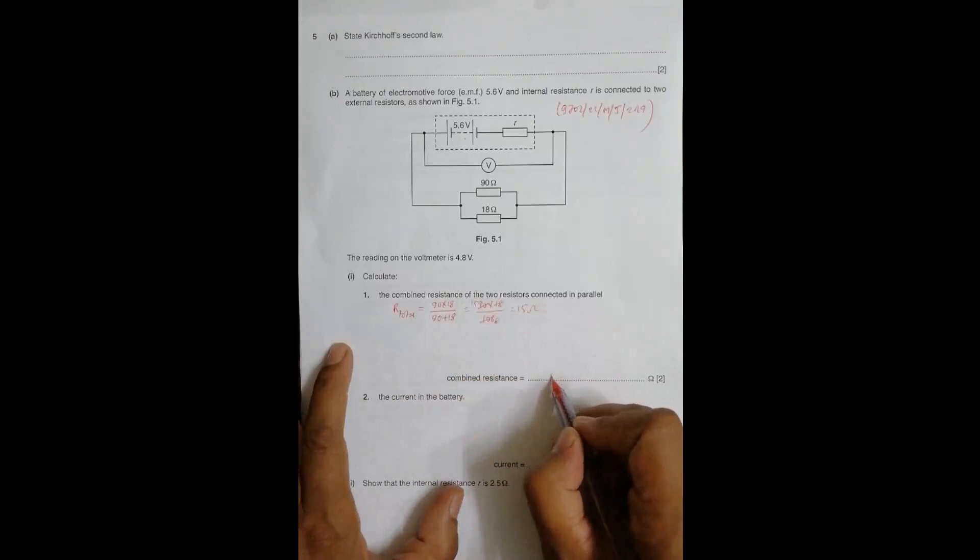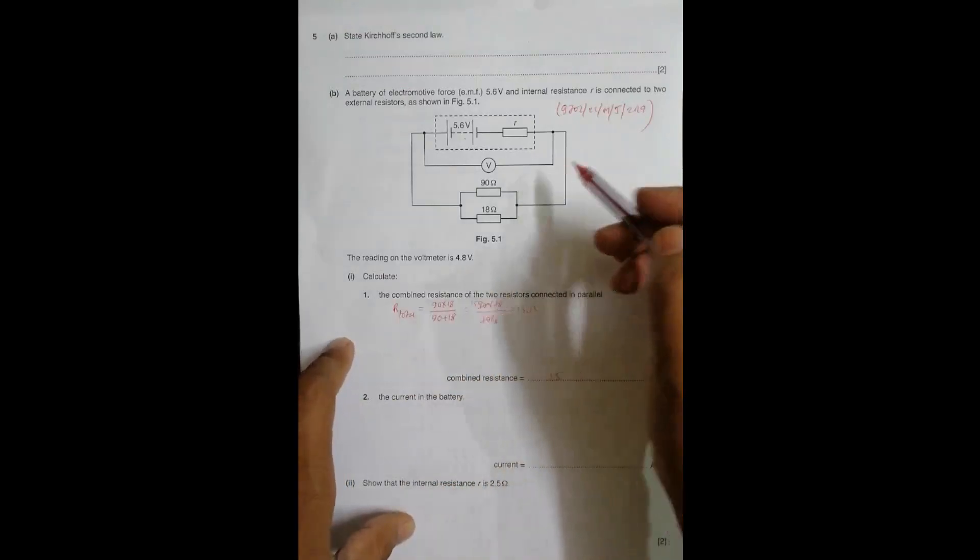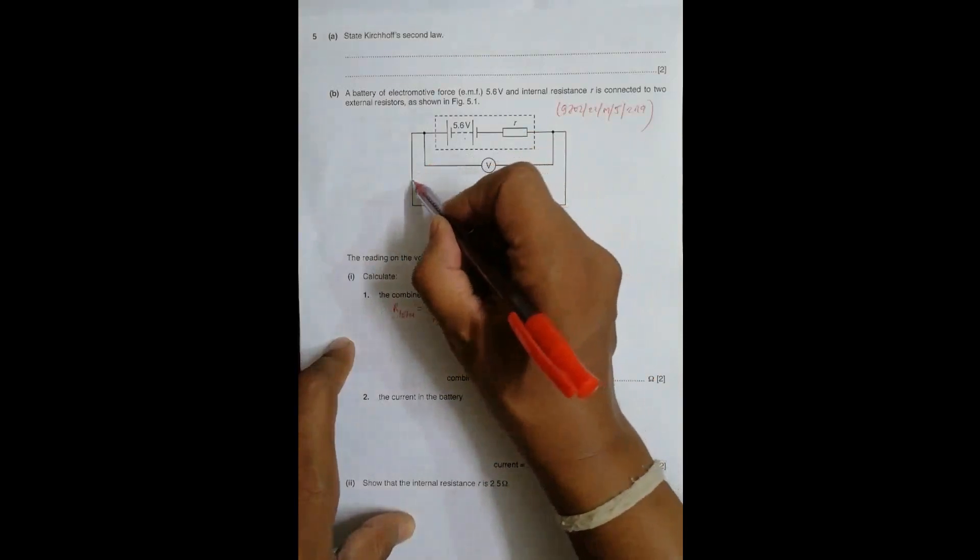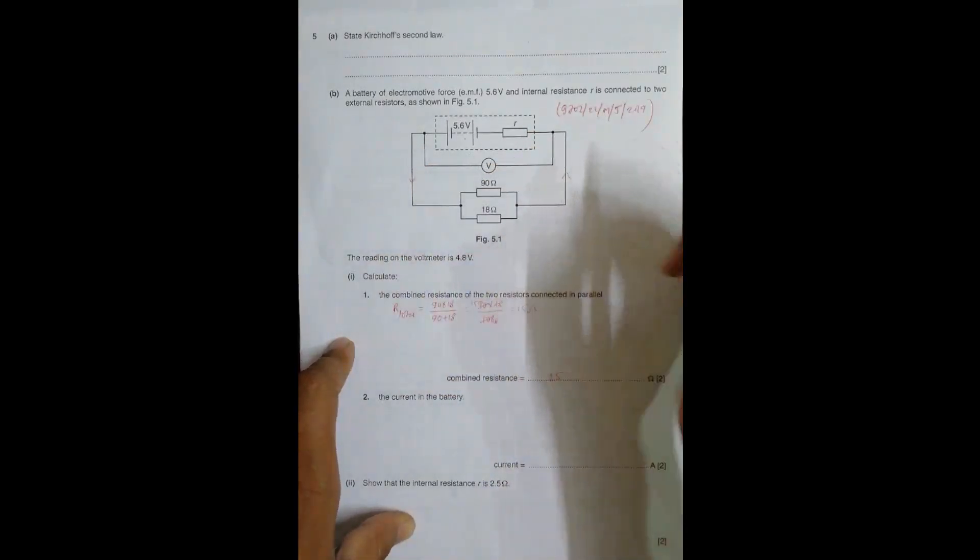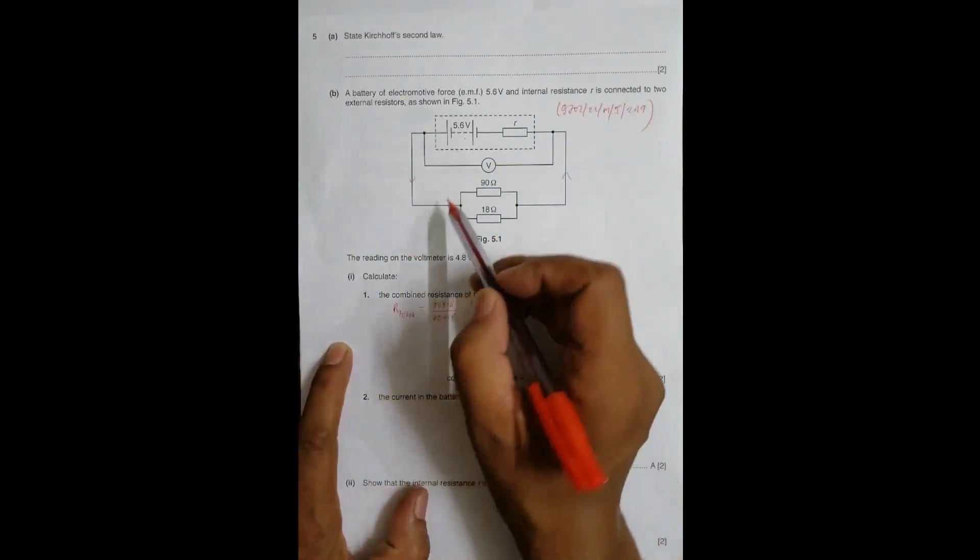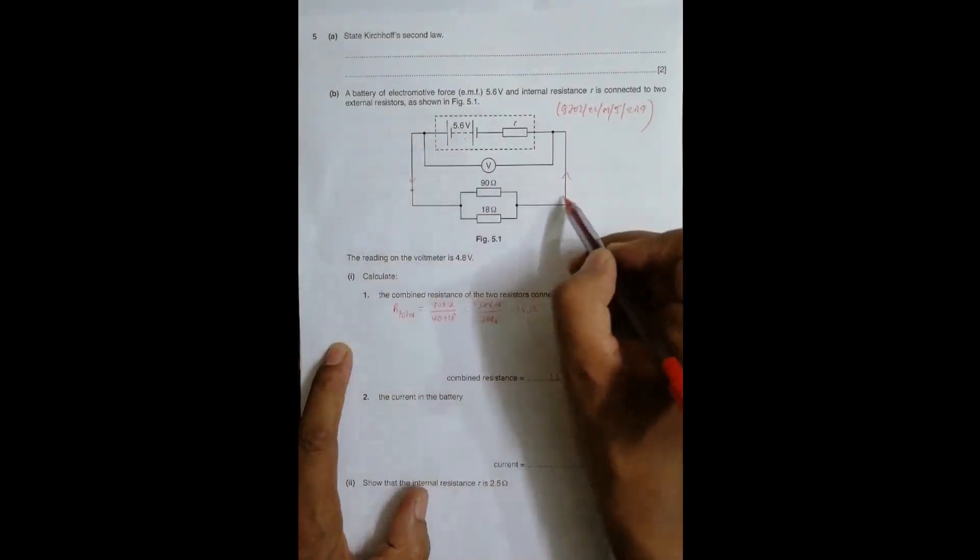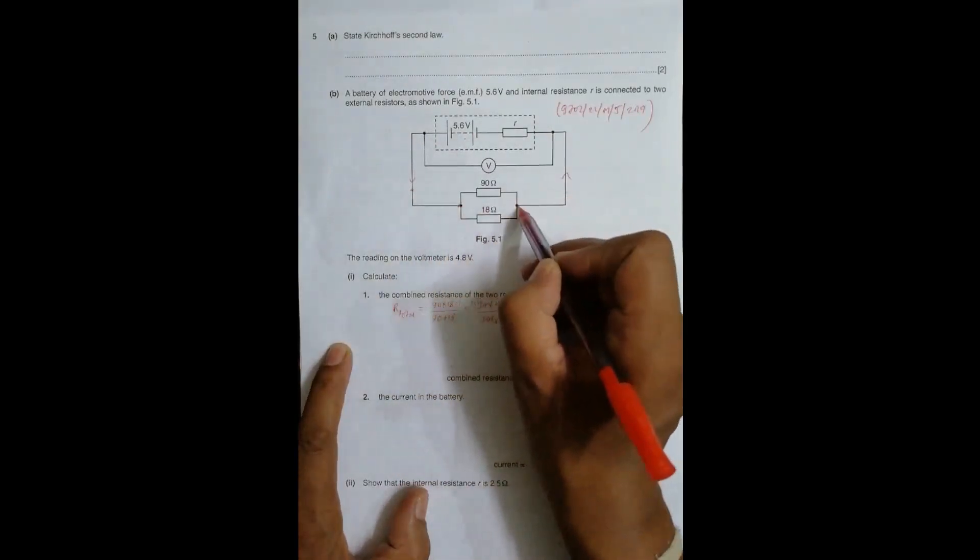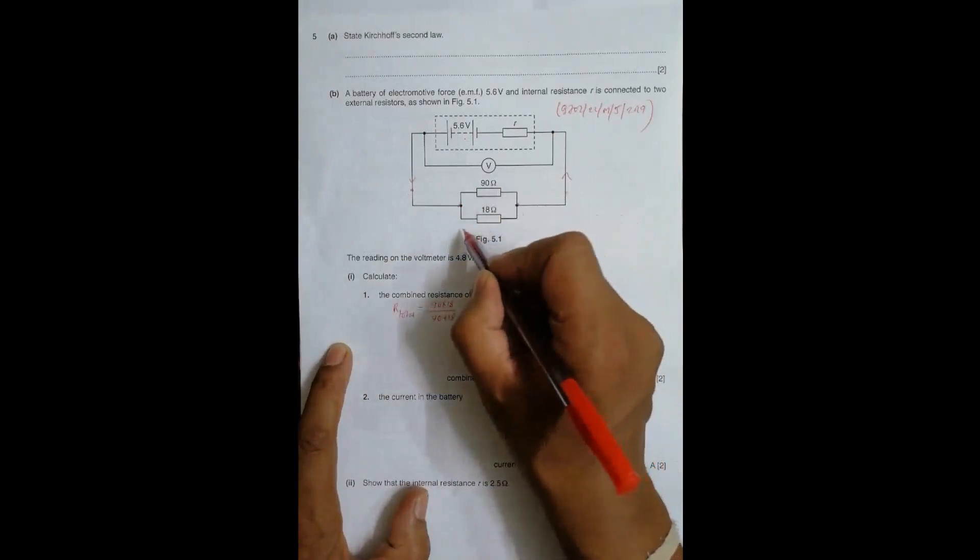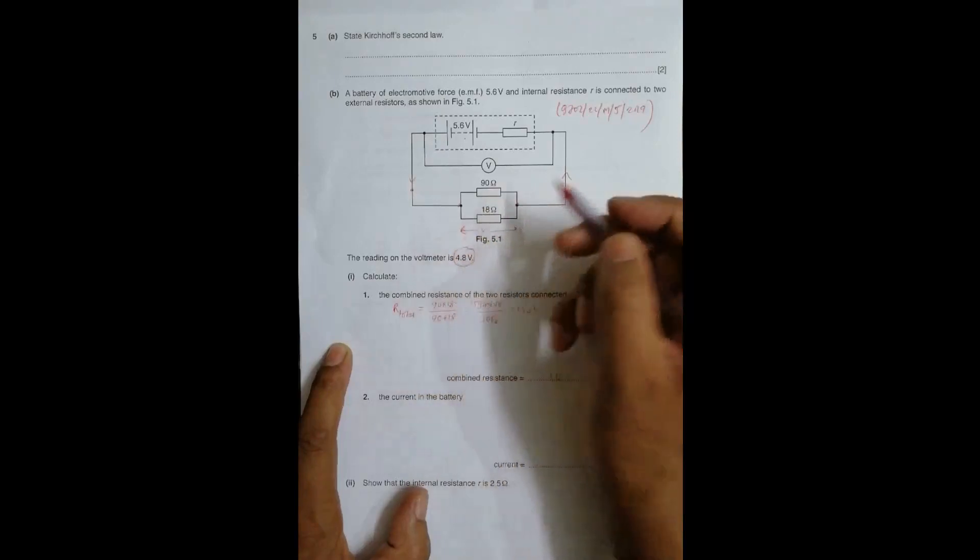Next, we need to find the current in the battery. The current in the battery is the same current that flows through the circuit. It should be given by the combined PD - all points here have the same potential. The combined PD is 4.8 volts and the resistance is as calculated.